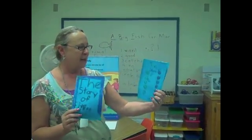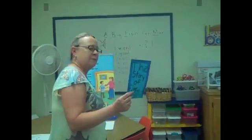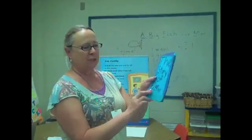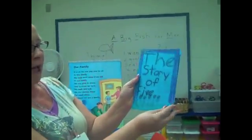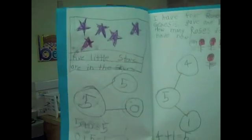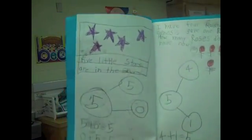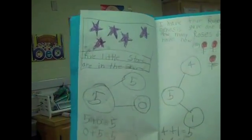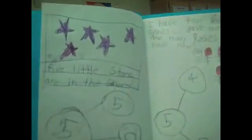We're so excited. My students made the story of five, and inside of their little books — we're not done yet — but one little girl has five little stars in the sky, and she shows her whole and her parts and her parts.